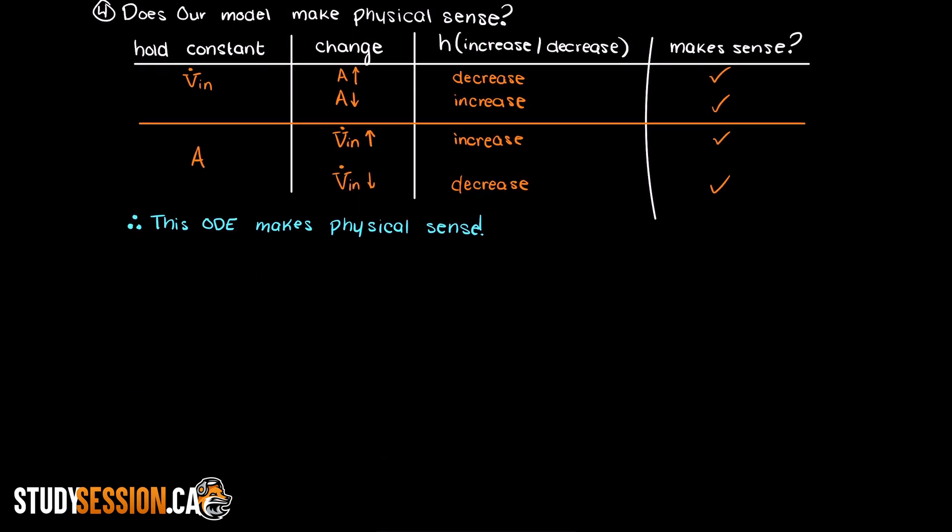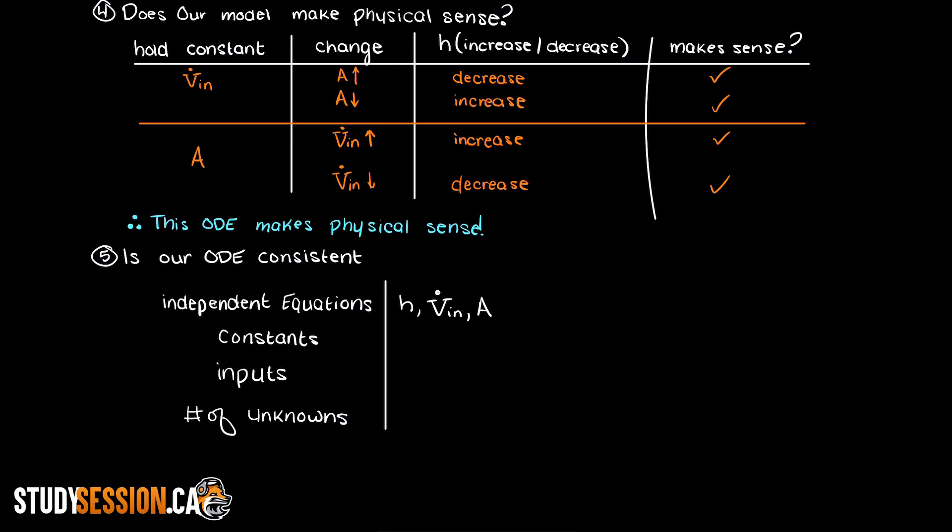Now we need to check if our ODE is consistent and we have enough equations to ensure that we can actually solve this problem. As we only have one ODE here this is rather trivial, however it is a great habit to get into early as in later problems you can easily get mixed up by skipping important steps in simpler problems. Alright, so let's write all of our independent equations at the top here. So we have the height, inlet volumetric flow rate, and the area. Use this top region here as a checklist to ensure that all the independent equations are properly accounted for.